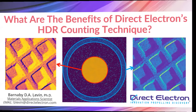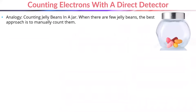To explain what HDR counting is, I first need to explain two other concepts: counting on a detector and integrating a signal on a detector. To explain these in a simple way, I'm going to use an analogy. Imagine instead of recording a signal made of electrons, you were tasked with counting the number of sweets in a jar. If there are relatively few sweets in the jar and you can easily distinguish all of them, the best approach would be to manually count all of the sweets.